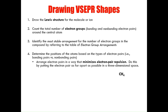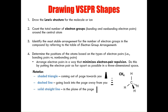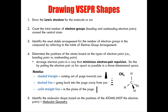Take CH4 for example — the VSEPR shape would look something like this, with bonds to hydrogen arranged as far apart from each other as possible. The shaded triangle means the bond is coming out of the page towards you, the dashed line means the bond is going back into the page away from you, and the solid straight line means the bond is in the plane of the page. The last rule is to identify the molecular shape based on the positions of the atoms, not the electron pairs.